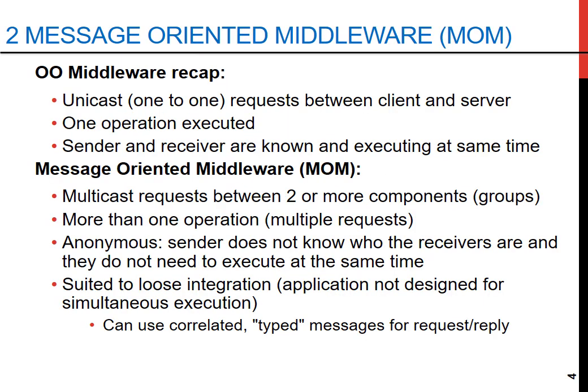To understand message oriented middleware, let's first recap object oriented middleware. In traditional middleware, communication is often unicast — one-to-one between a client and server. There's typically one operation executed at a time, and both the sender and receiver need to be aware of each other and be active simultaneously.